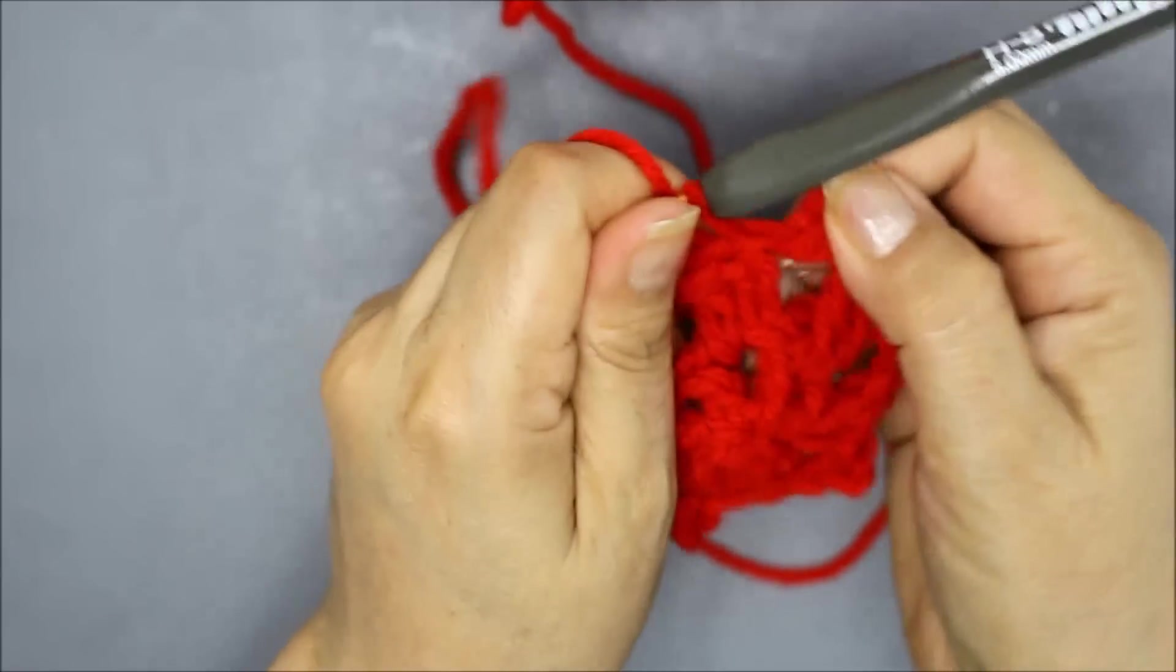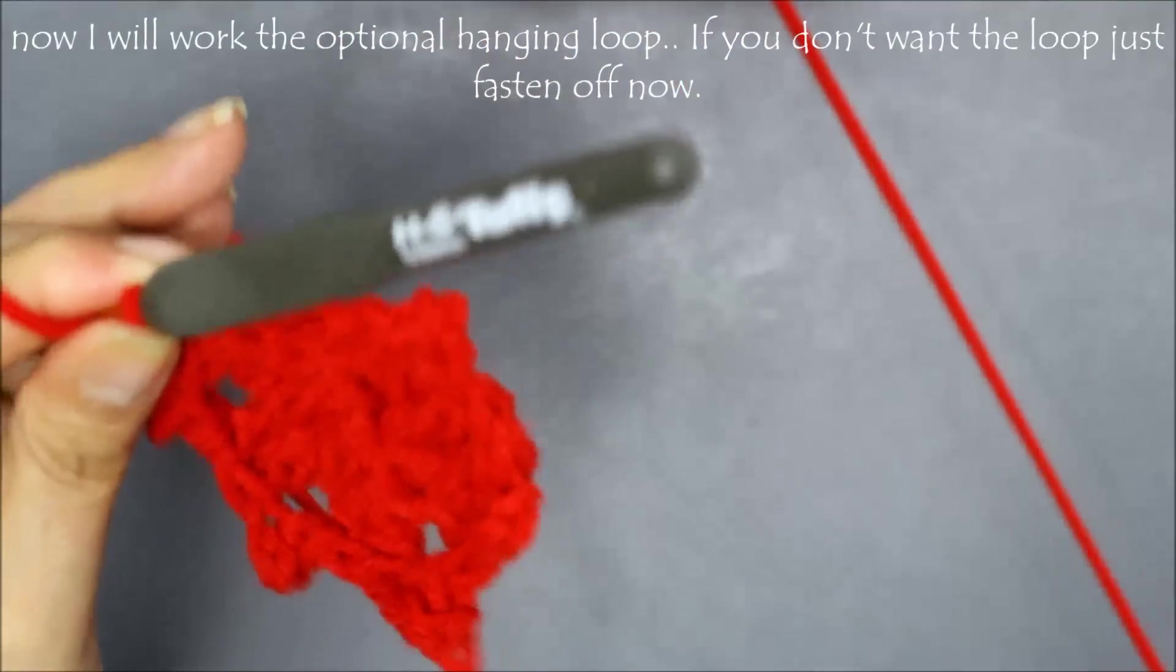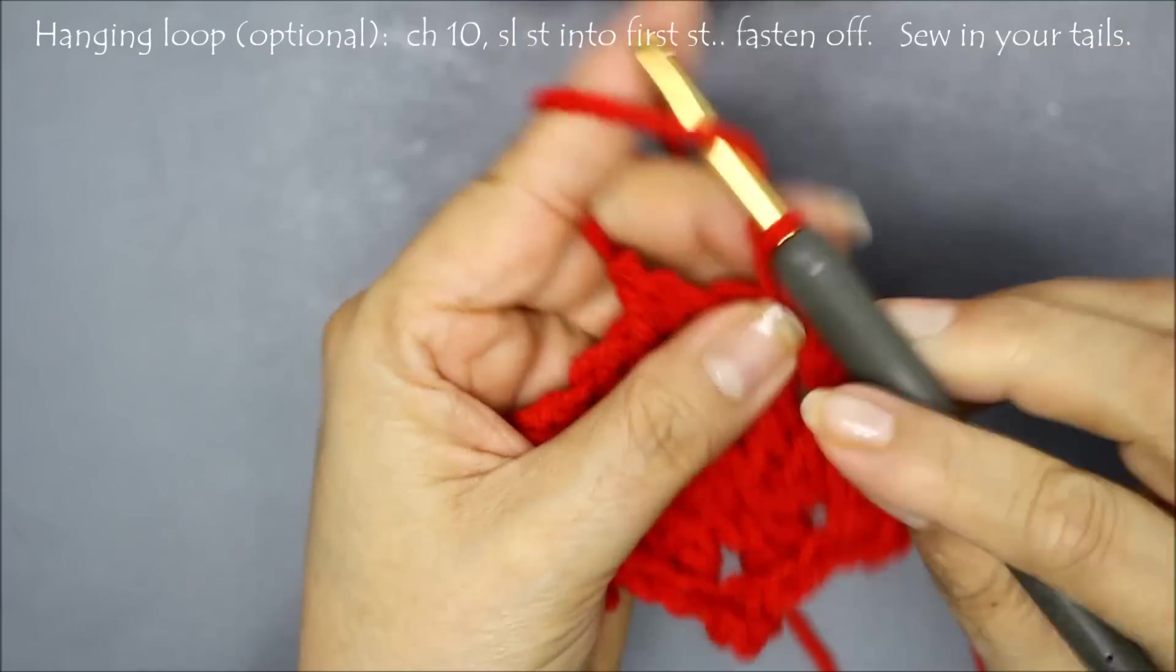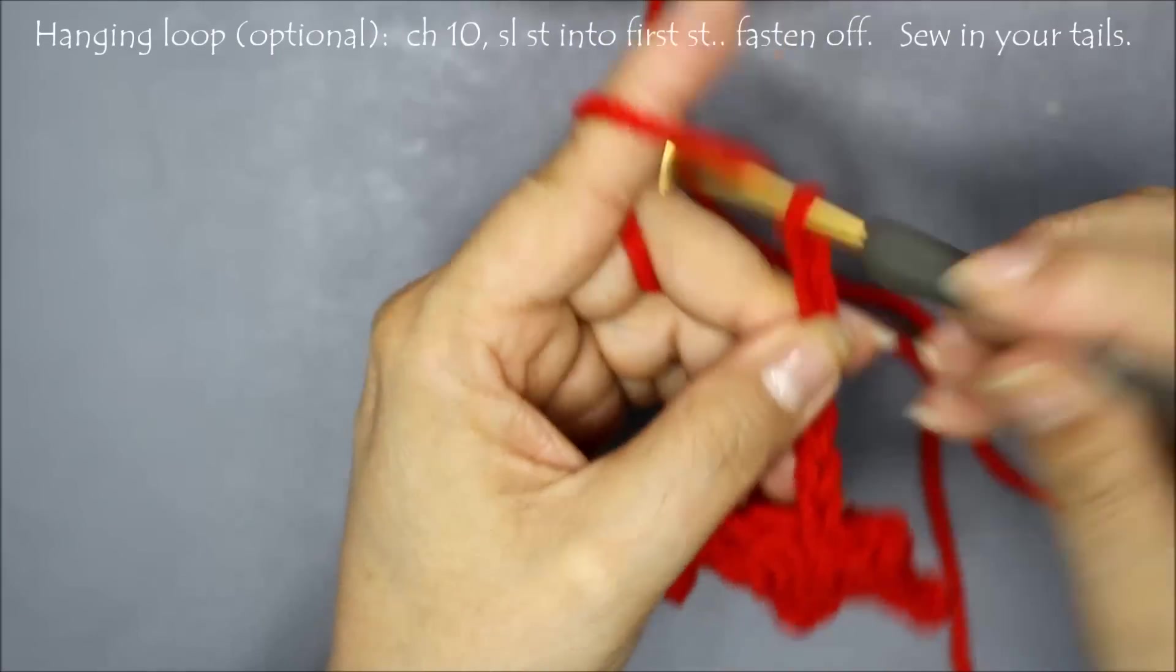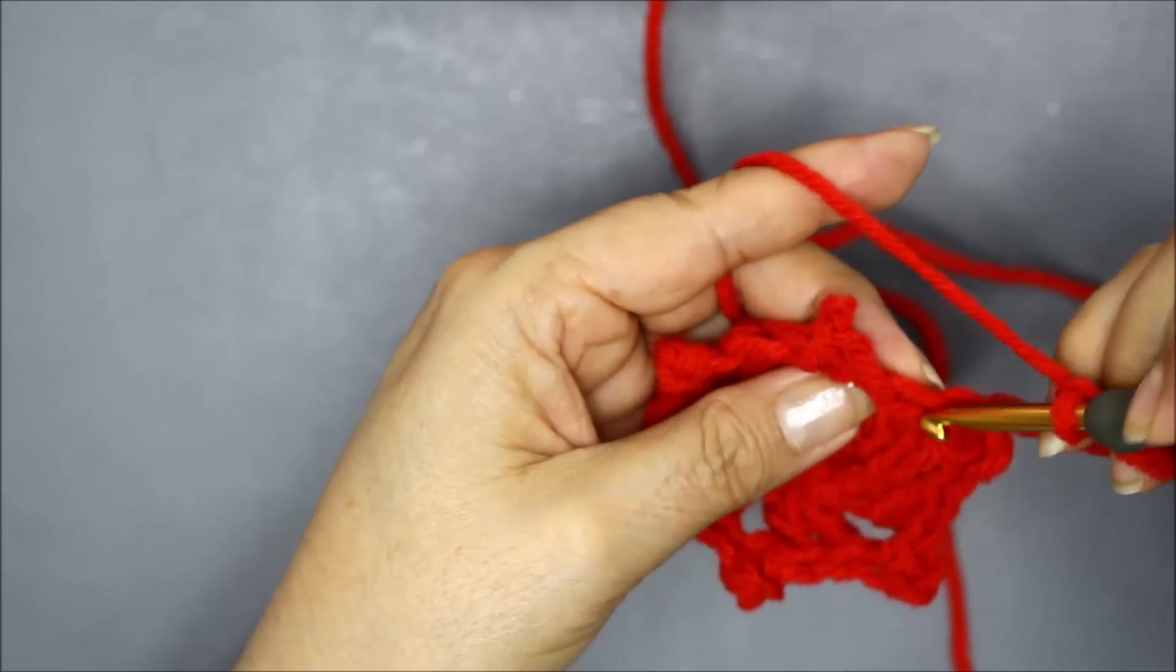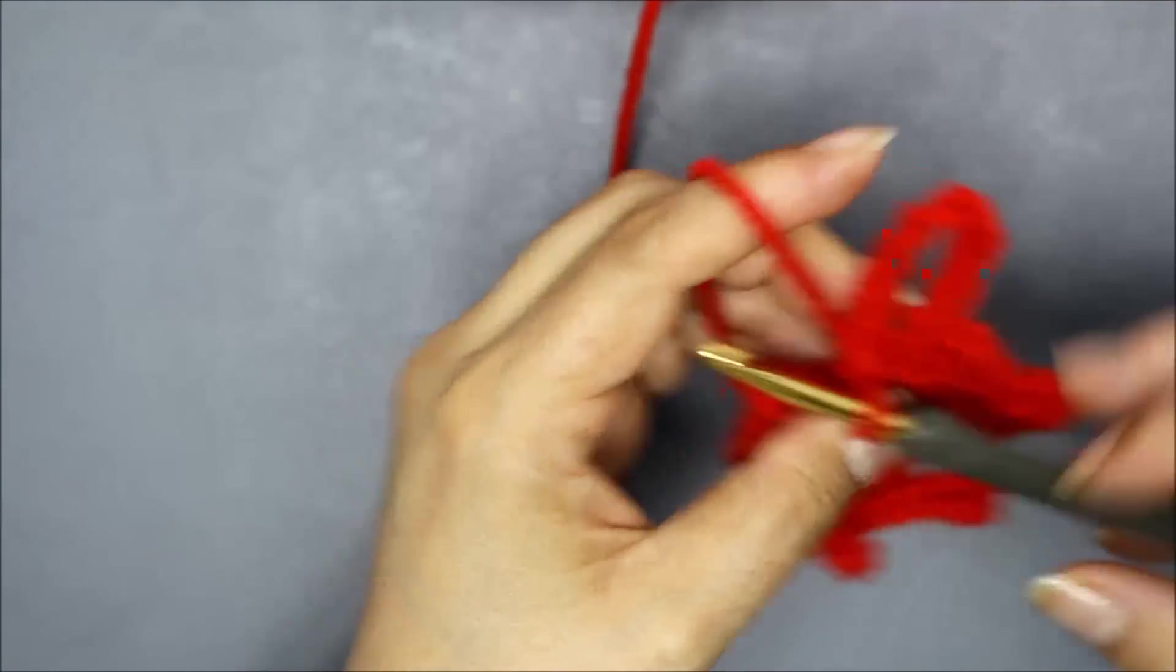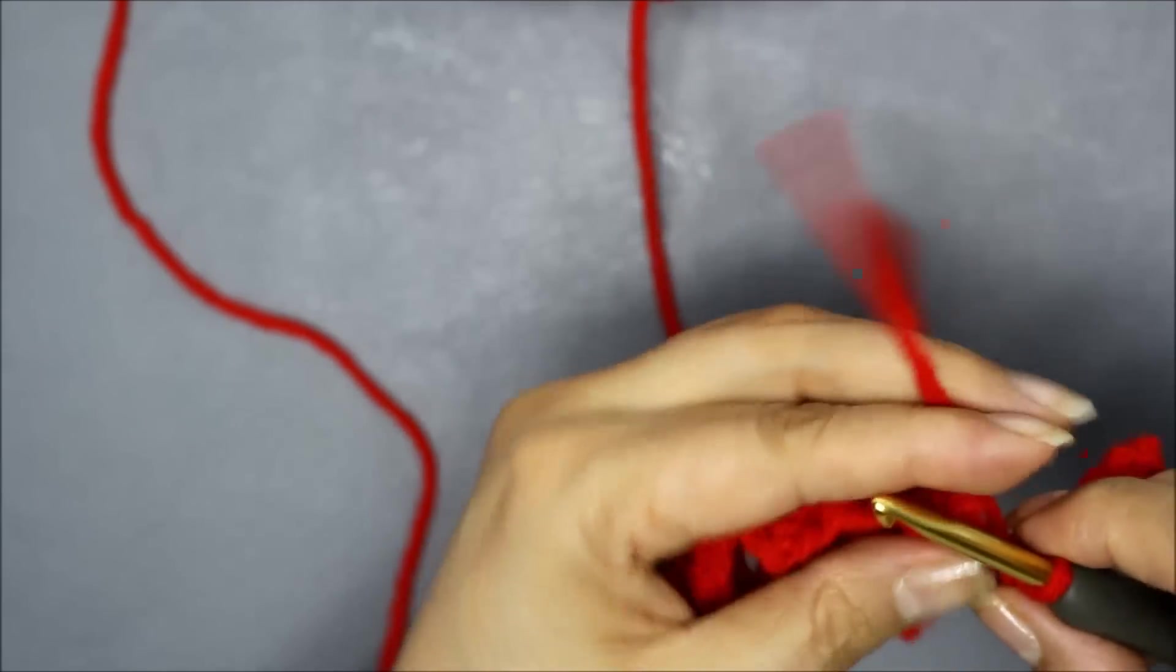Now if you want, you can fasten off here. If you want to create a little loop to hang your snowflake, you can do that by chaining some chains or pulling out a loop. Here what I'm going to do, this is optional, I'm going to chain ten. One, two, three, four, five, six, seven, eight, nine, ten. Once I have those ten, I'm going to go back to that same first stitch where I slip stitched and do a slip stitch there. This is creating your little hanging loop. I'm going to cut my yarn and fasten off.